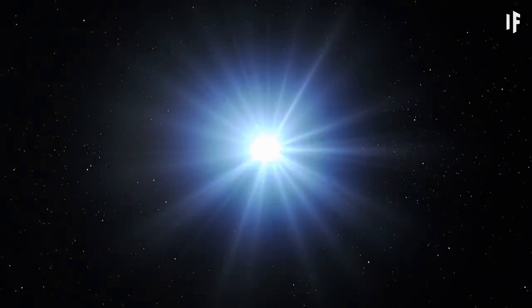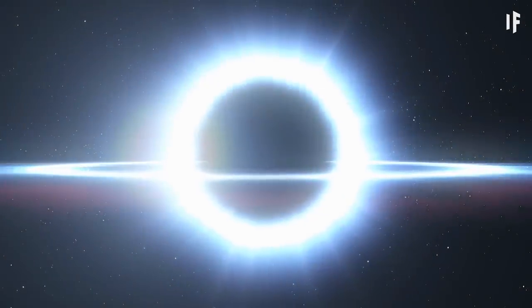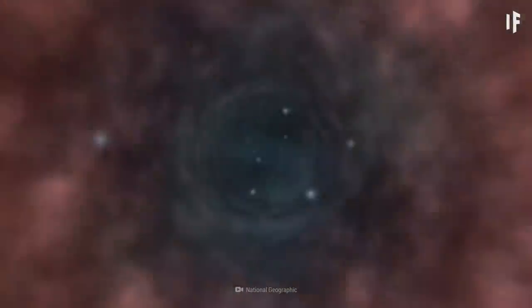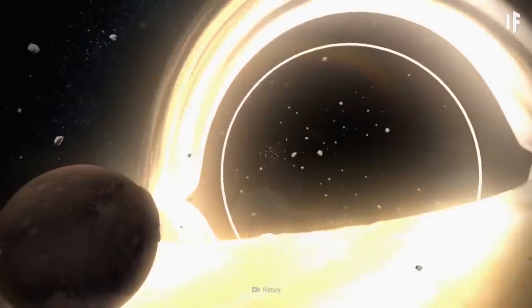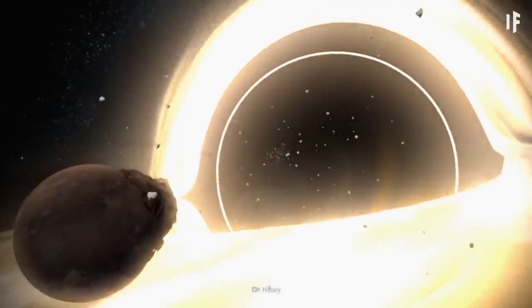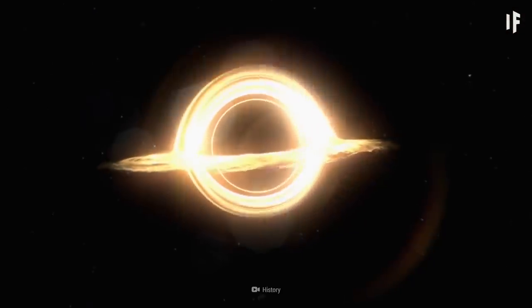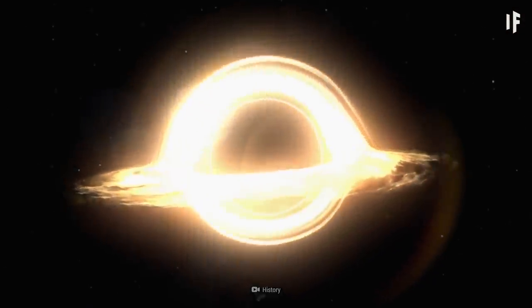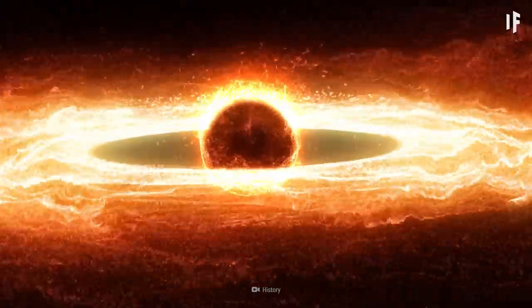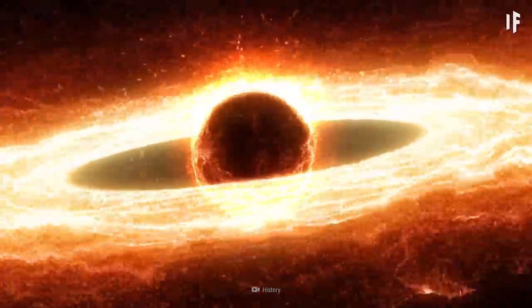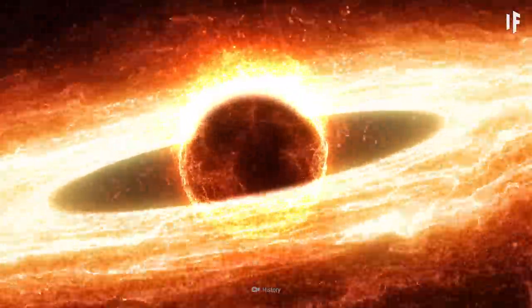A black hole, which is the remains of a dead star, contains a large concentration of matter squeezed into a tiny area. And its gravitational field becomes so strong that all matter, and even light gets sucked into its vortex.